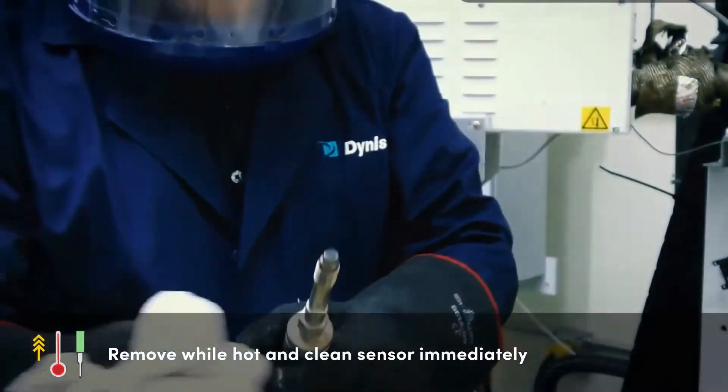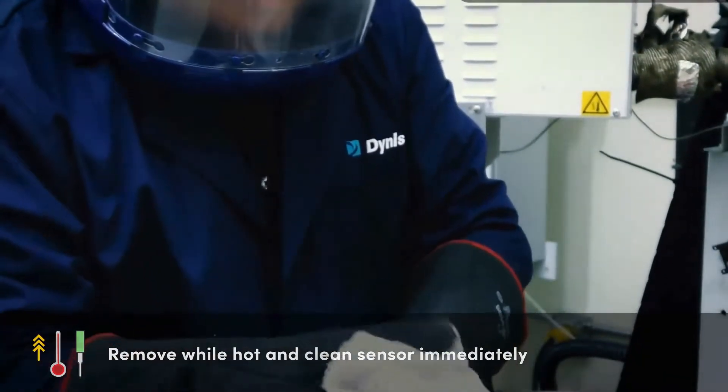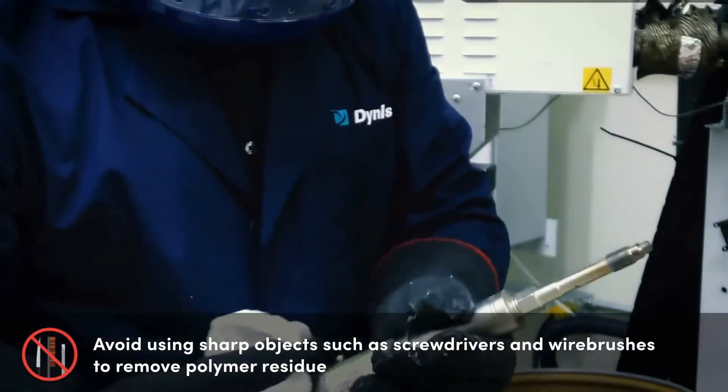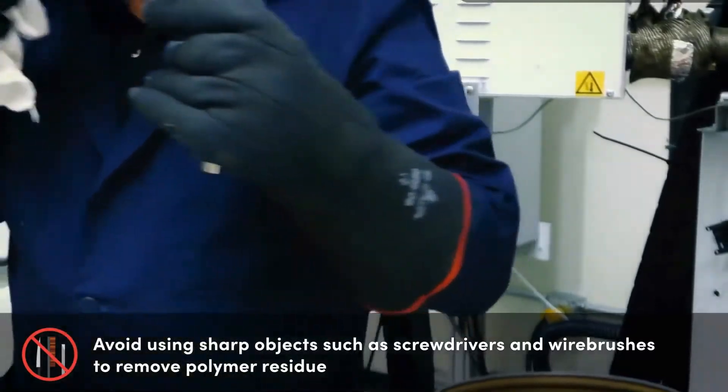The technician then wipes clean the sensor immediately with a cotton rag. Dynisco does not recommend the use of sharp tools, screwdrivers, or wire brushes for removing polymers.